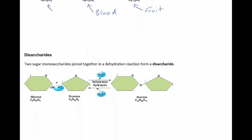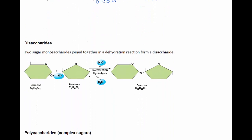Now, if you join two monosaccharides together, you get a disaccharide. Di for 2. And of course, they join together in a dehydration reaction. Here is an example of a glucose and a fructose sugar joining together in a dehydration reaction where water is given off to form sucrose.